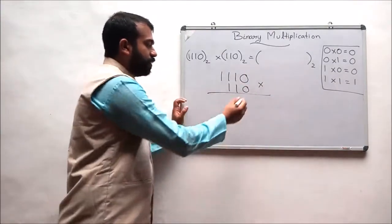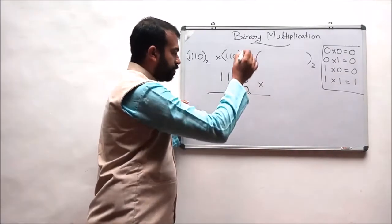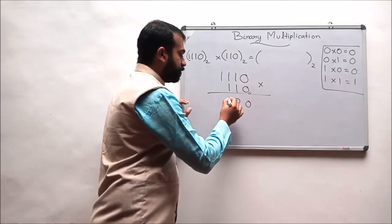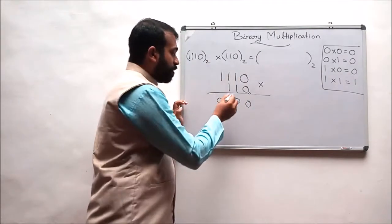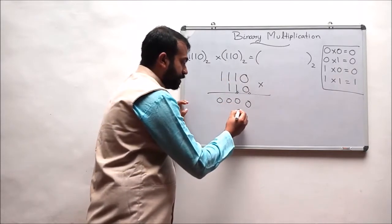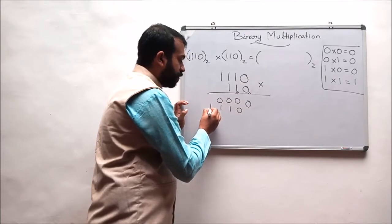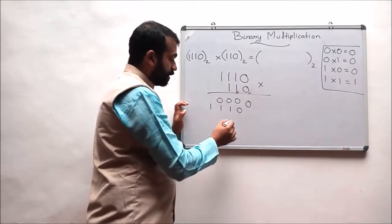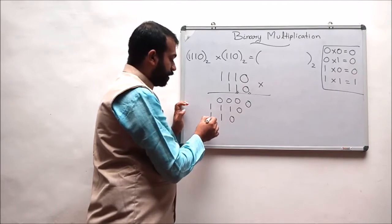First, 0 is multiplied with 1110, which will result in 0000. In the second step, 1 is multiplied with 1110, which will result in 0111. In the third step, 1 is multiplied with 1110, which will result in 0111.